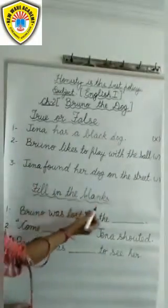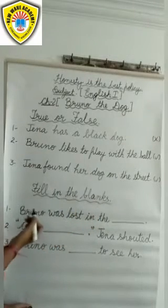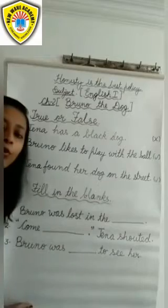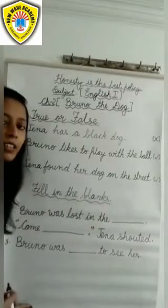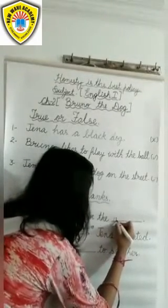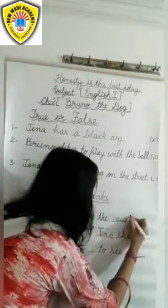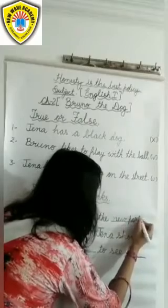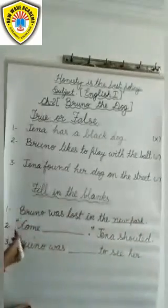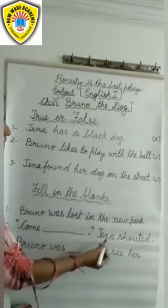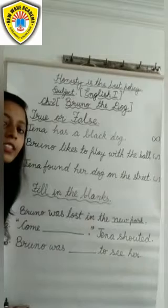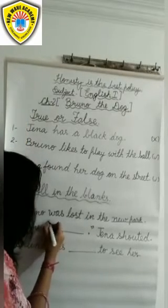Fill in the blanks. First: Bruno was lost in the dash. Bruno dash mein kho gaya tha. Kahaan kho gaya tha? New park. Second: come dash, Jenna shouted. Jenna chillaayi. Kya chillaayi? Come home, Bruno.